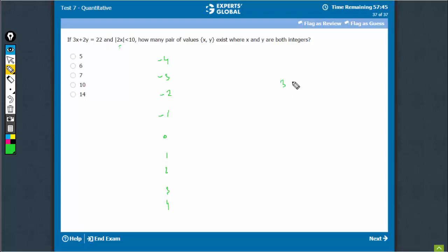3x plus 2y is equal to 22. So, when x is even, even comes here, something even would be here, 2y, so y would be an integer.